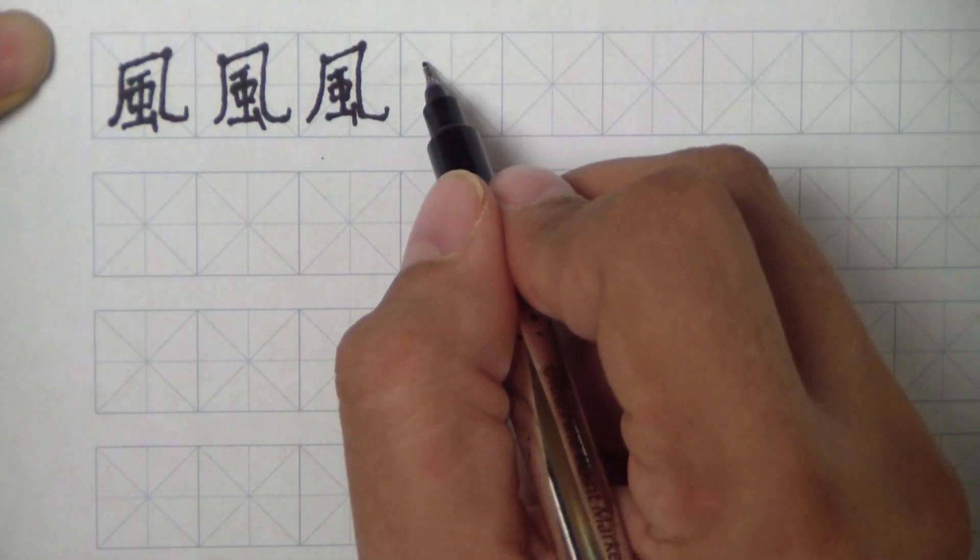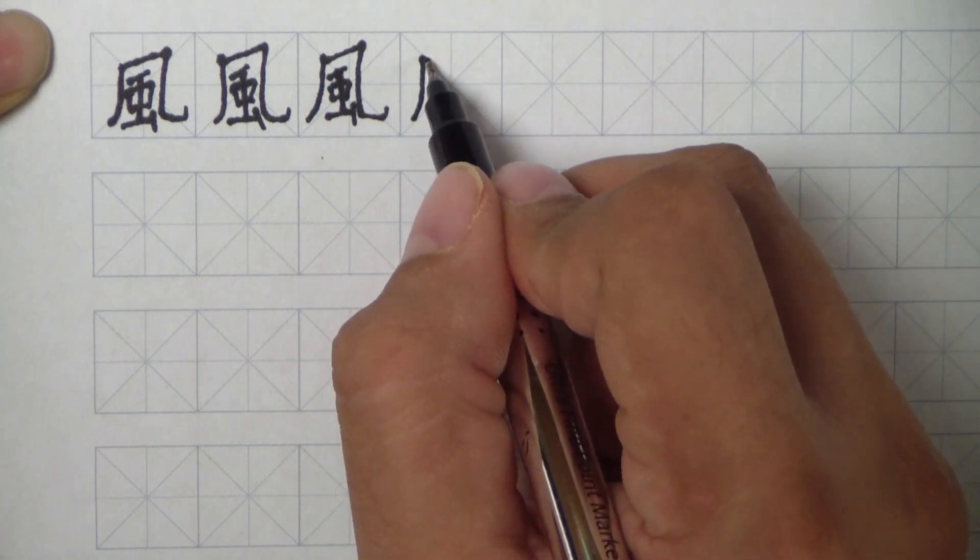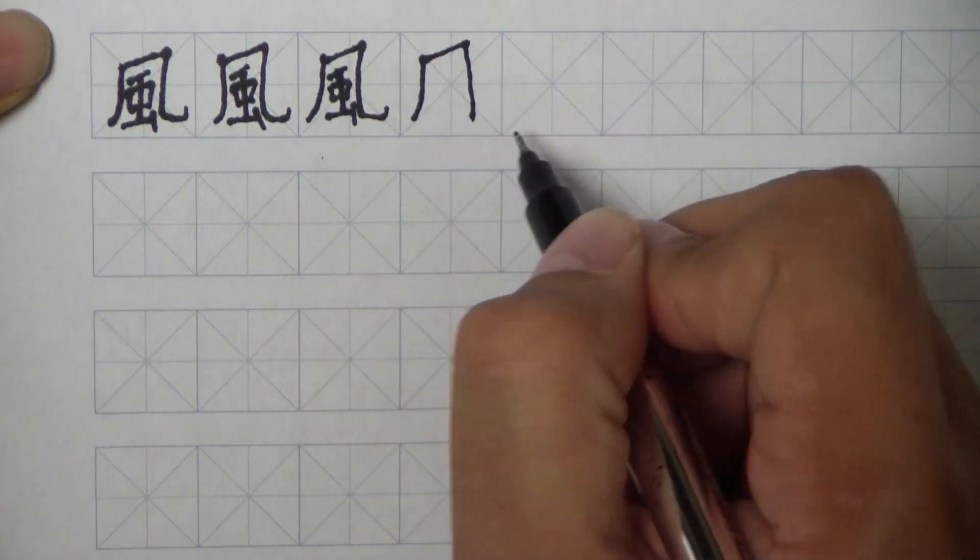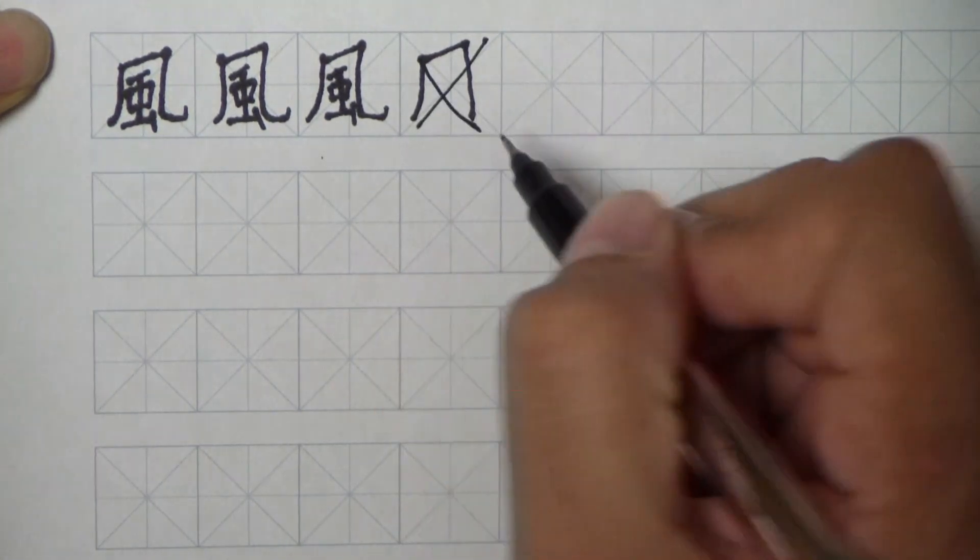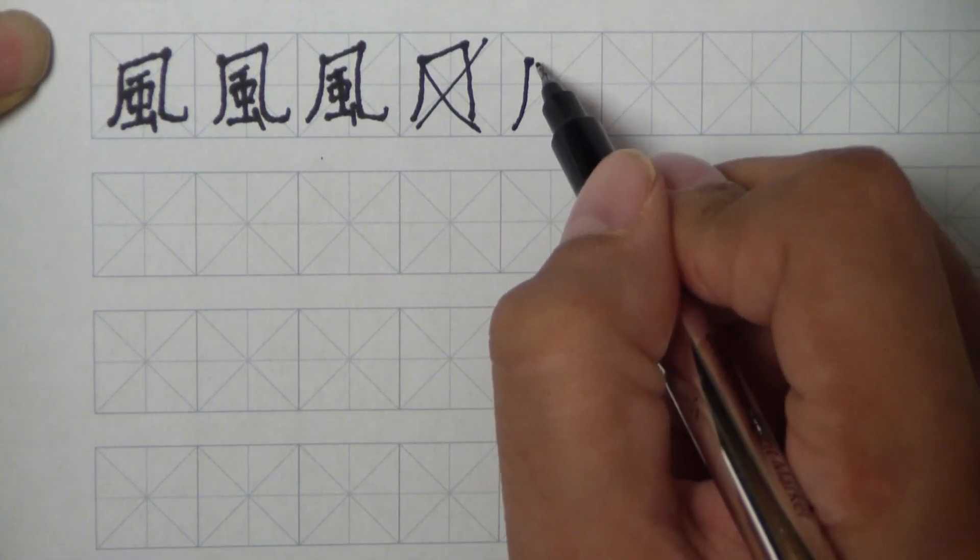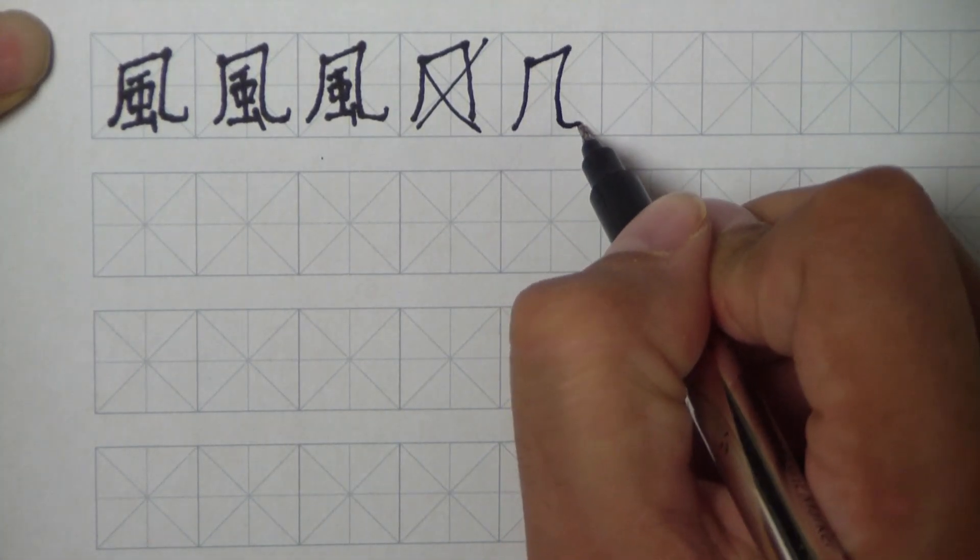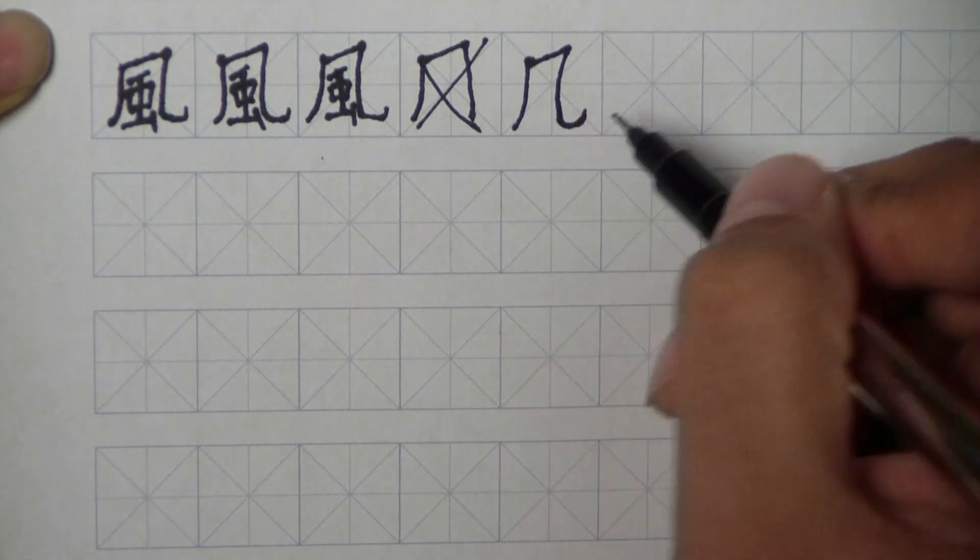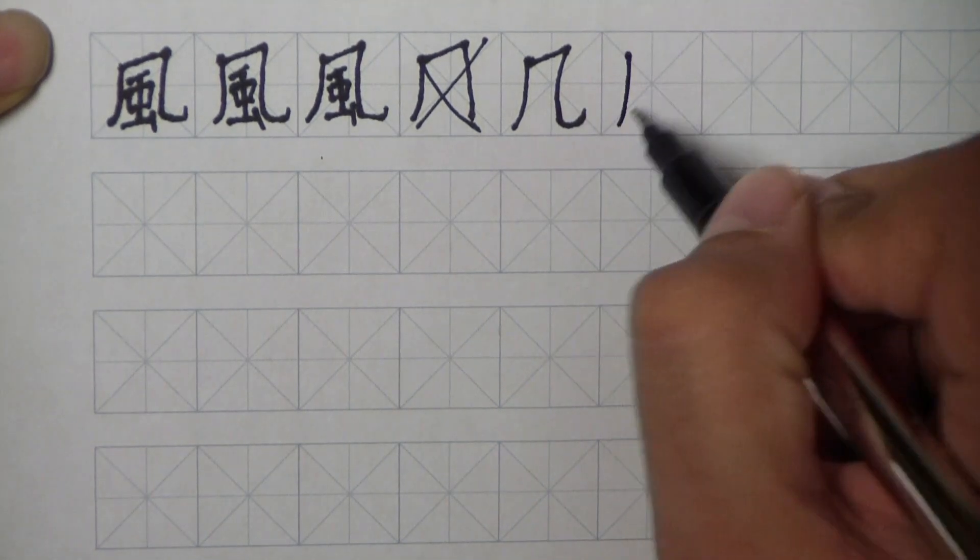All right, there's a couple mistakes people make with this character. So we start here, we come over, then we come down. We got to make sure we curve. It's not a straight line, so that's not the way it's supposed to look. So we're going to come over, go up, come down, and then over. Have that curve here. That curve is important. It's part of the character.